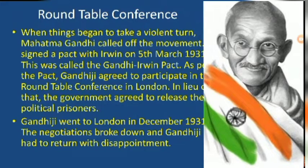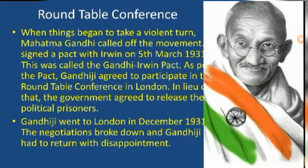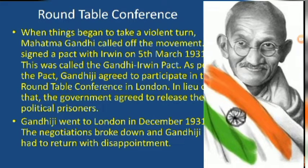When things began to take a violent turn, Mahatma Gandhi called off the movement. He signed a pact with Irwin on 5th March 1931, called the Gandhi-Irwin Pact. According to this pact, Gandhiji agreed to participate in the Round Table Conference in London, and in exchange the government agreed to release political prisoners.